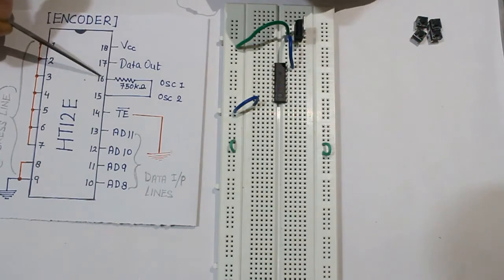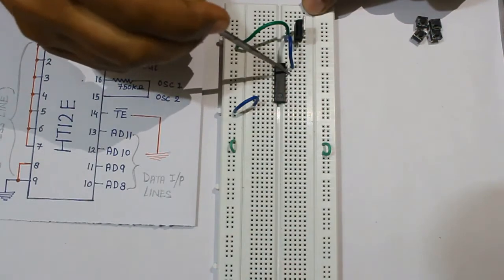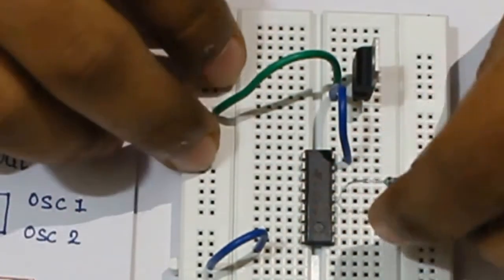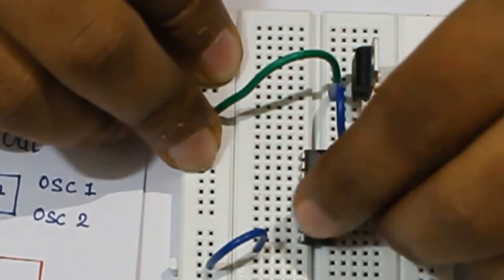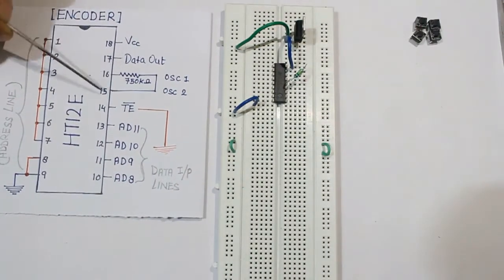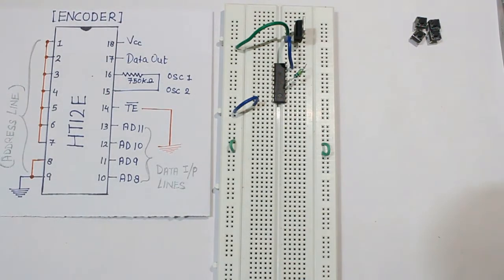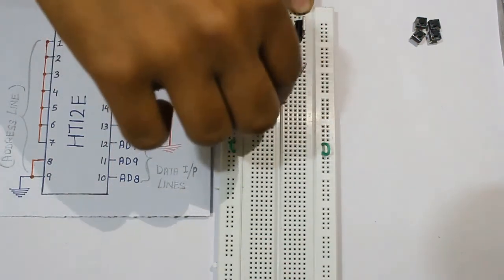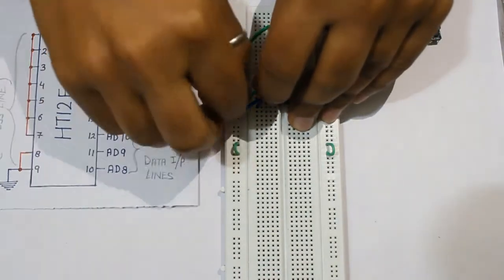Now I will place 750 kOhm resistance between 16th and 15th pin. This means my oscillator 1 and oscillator 2 pin. All done. Now 14th pin to ground. The 14th pin I will connect to ground. I have connected to ground.